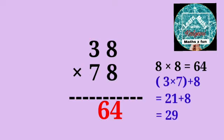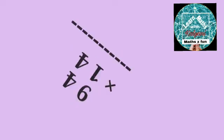equals 21 plus 8, which is 29. So the answer is 2,964. Let's do another multiplication: 94 by 14.